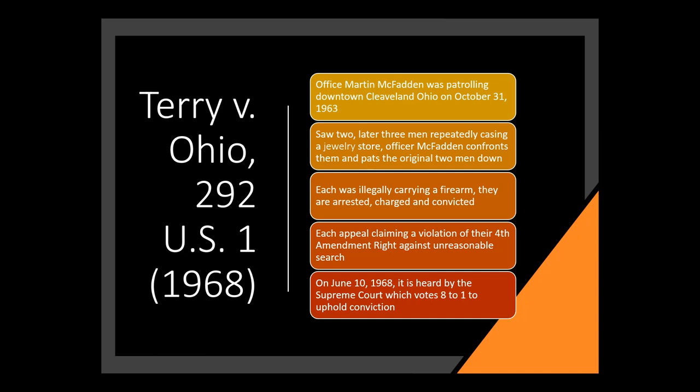McFadden follows them as they do more reconnaissance of the store window on Huron, and he becomes convinced they're doing a casing job. He stops them and pats them down. He holds them — tells them to stop, they stop, and he frisks them. He's frisking them for weapons, and they were carrying firearms. They are felons, and they are not allowed to have guns.